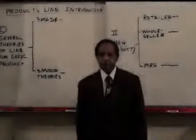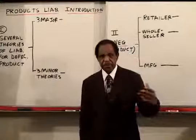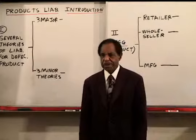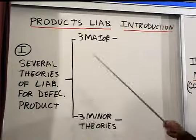This is an introductory lecture on products liability. I'll explain how the general system works, and then there are separate lectures on the various parts of the system. In general, there are several theories of liability for a defective product — three major theories and three minor theories.